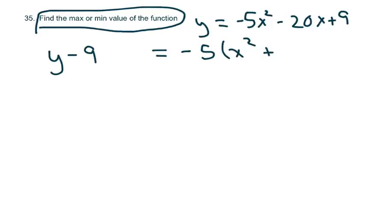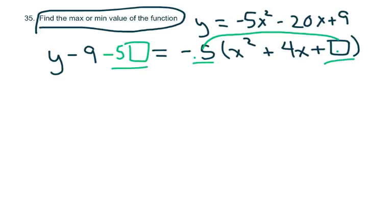Okay, since I'm adding something on this side that's negative 5 times this, so I'm actually subtracting that. I'm going to put that on this side. So I have this part and this part is the part we're changing. So you complete the square. Half of 4 is 2 and square it and you get 4.